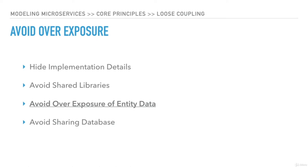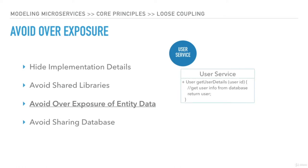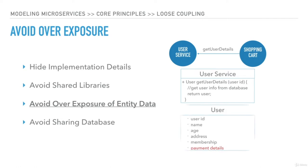Avoid overexposure — we should avoid exposing information which is not needed. For instance, we have a user service which exposes an API to get user details. This API returns a user object which contains many attributes. When the shopping cart service is getting the user details, the overexposed implementation can share all attributes including payment information, though the service does not need it. The API should just return the most common user attributes, and specific attributes should be exposed through another API. Overexposure of attributes can lead to unnecessary dependency and coupling across services.